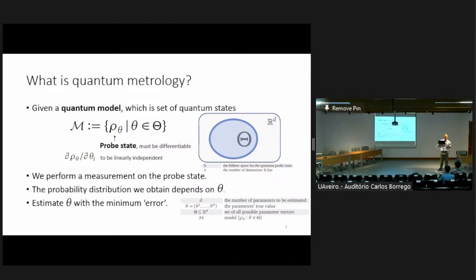In general, you also want the estimator to be unbiased: the expected value of your estimator should equal the true value, otherwise your estimator is pretty bad. Unfortunately for quantum metrology, we can only go for a locally unbiased estimator, which means you need some prior knowledge of theta to begin with. But you can always achieve this by doing some initial estimates first.